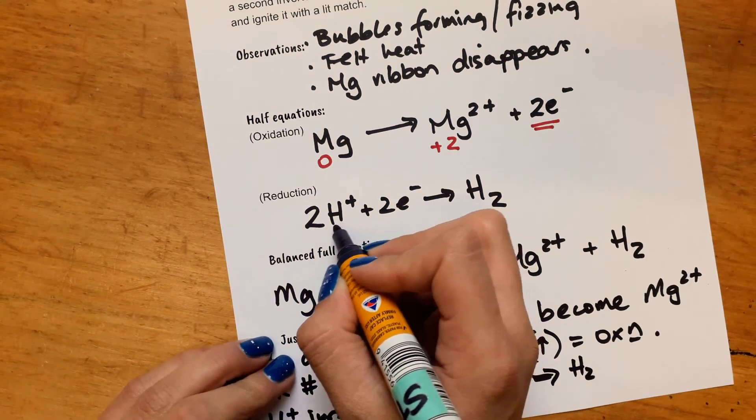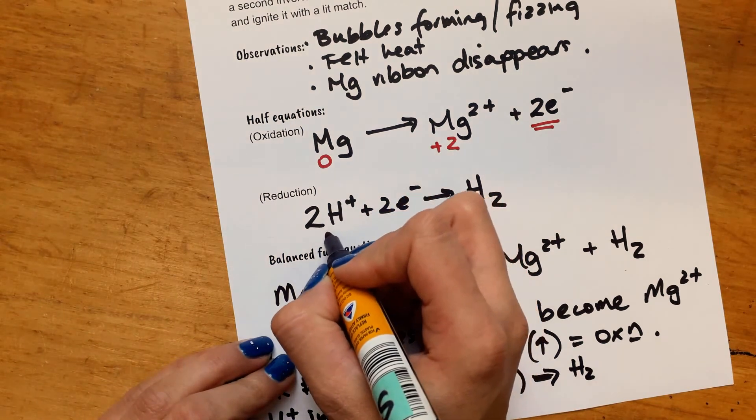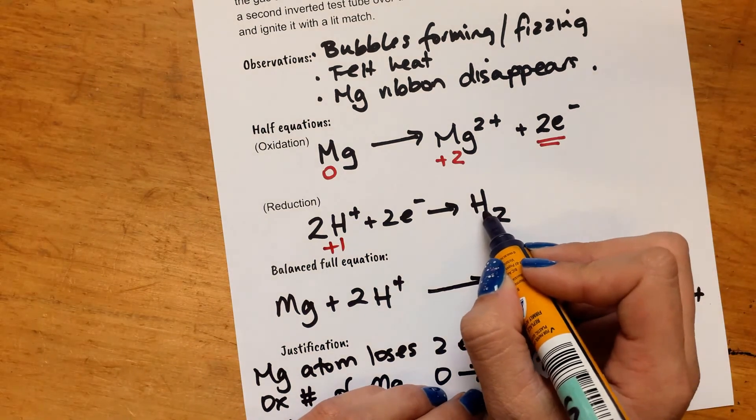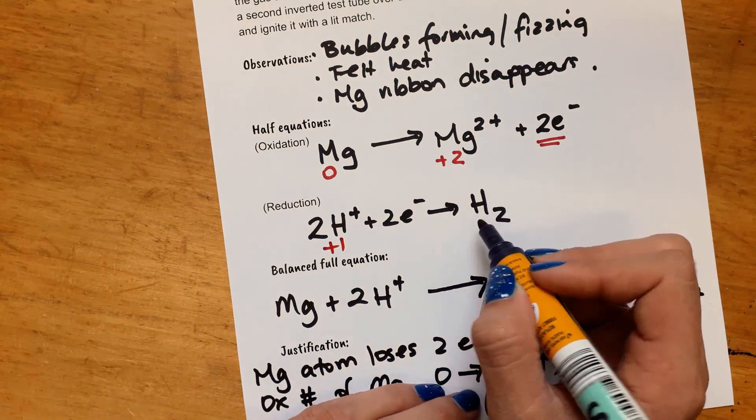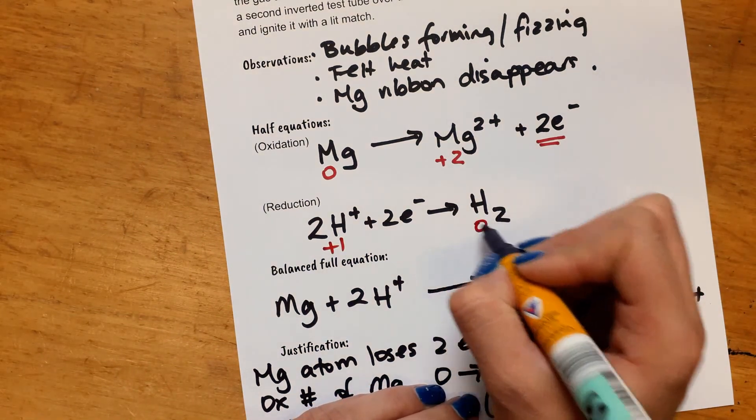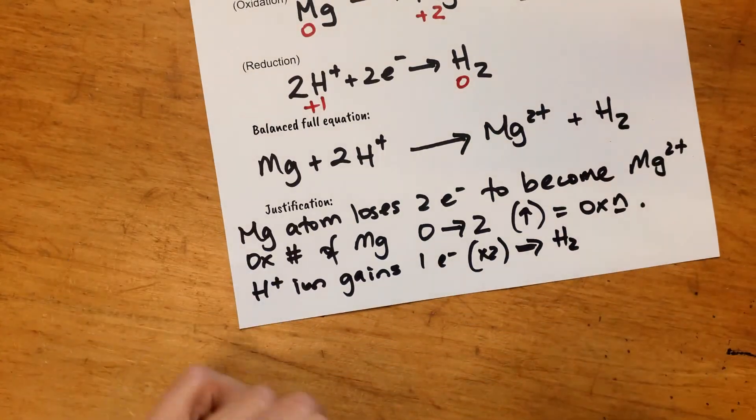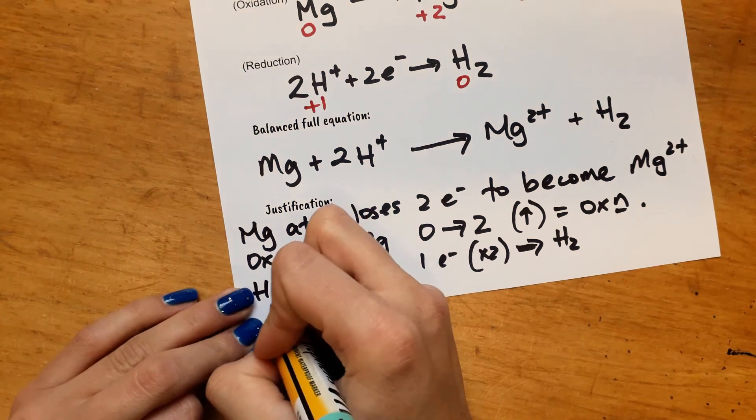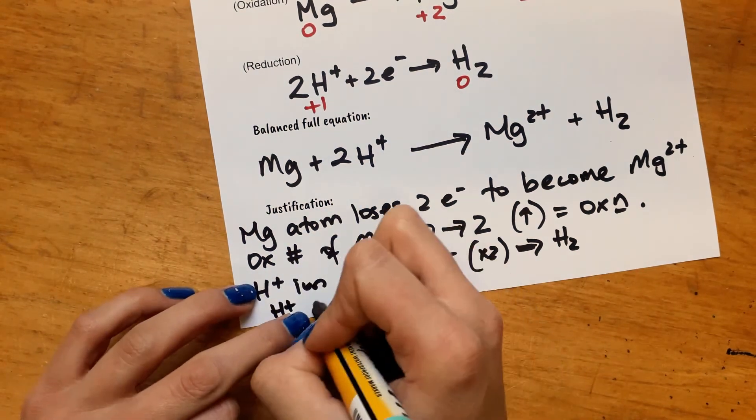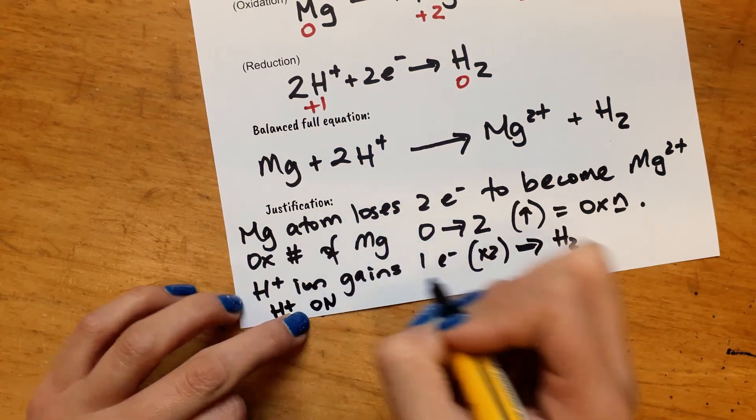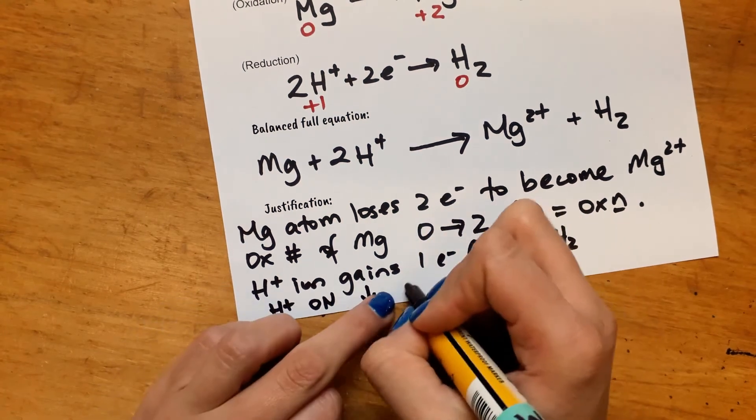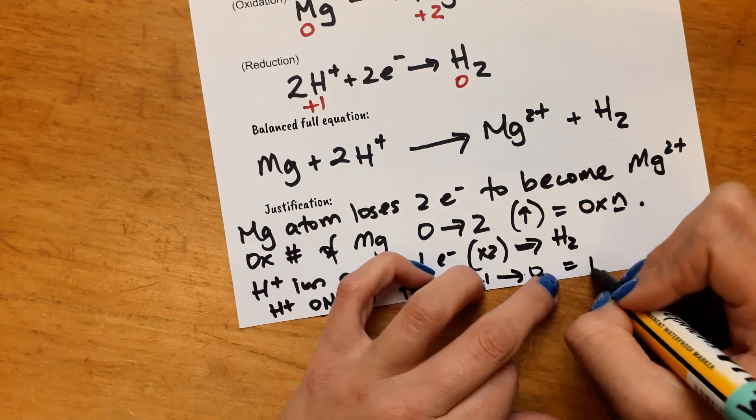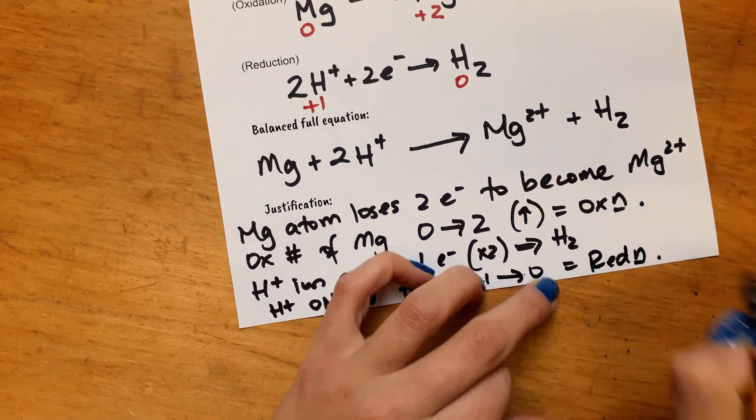Here the hydrogen itself is going to have a plus one oxidation number. And then here an atom of hydrogen in its elemental form is going to have an oxidation number of zero. So you could also justify it by saying H⁺ oxidation number decreases from plus one to zero, which means reduction has occurred.